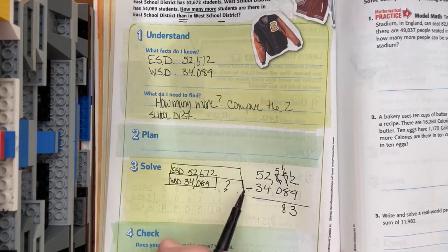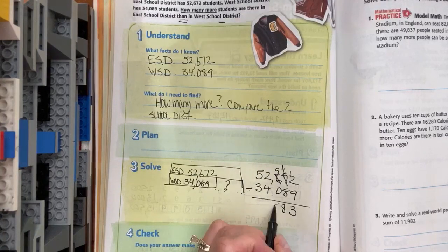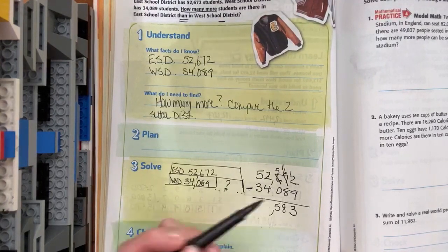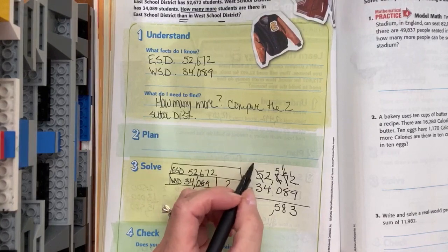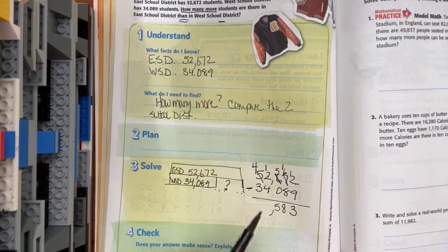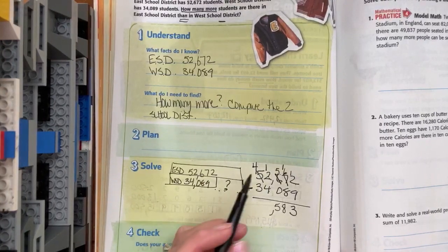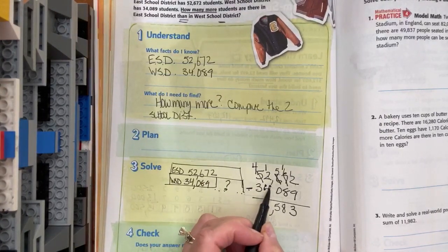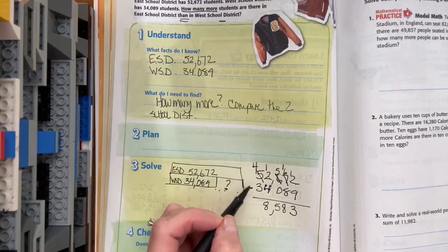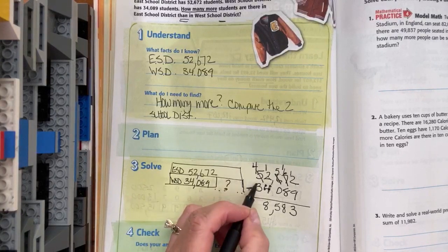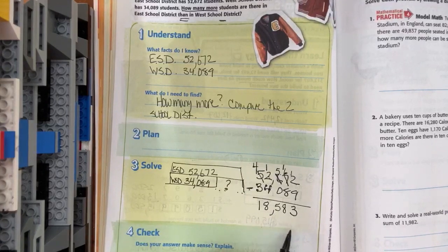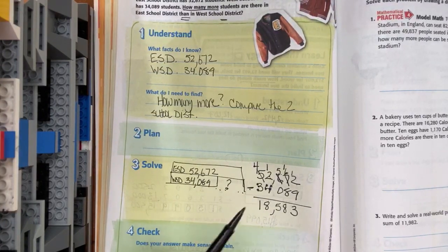In the hundreds, I have 5 hundreds minus no hundreds, which leaves us with 5 hundreds. In the thousands place, I have 2 groups of a thousand minus 4 groups of a thousand. I can't do it. I'm going to go next door. I'm going to take a 10,000 and leave the 4 behind. So 12 minus 4: 12, 11, 10, 9, 8. Sometimes it helps to use touch points when we're counting. And then 4 minus 3: 4, 3, 2, 1. So our answer is 18,583.